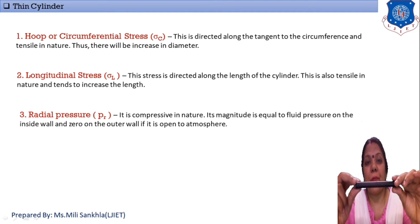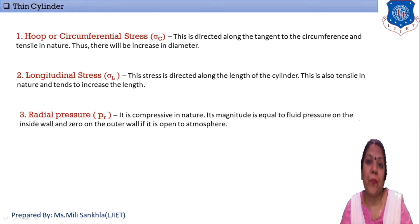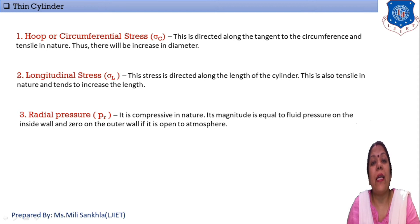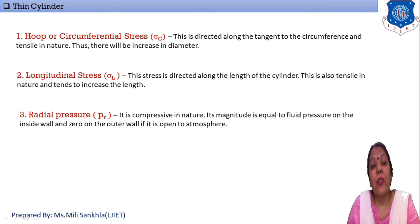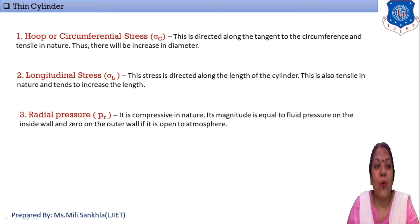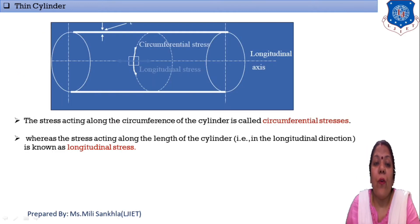If our stress acts along the length of the thin cylinder, then it is known as longitudinal stress. The radial pressure is compressive in nature and its magnitude is equal to the fluid pressure acting inside the thin cylinder. Hoop stress and longitudinal stress are both tensile in nature, but radial pressure is compressive in nature. These three stresses are induced in thin cylinders, but we discuss only hoop stress and longitudinal stress.